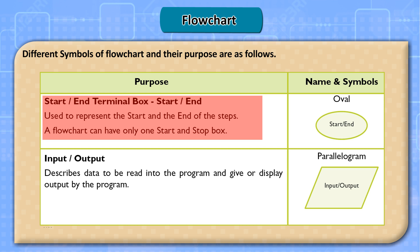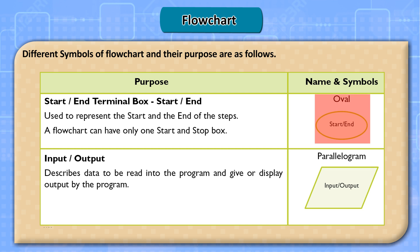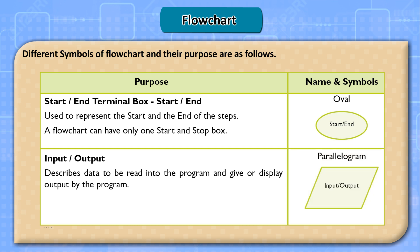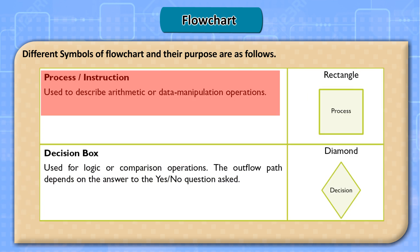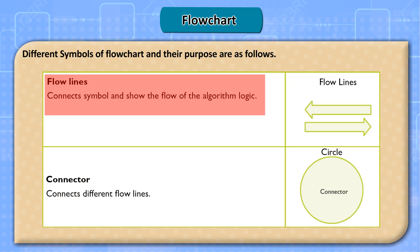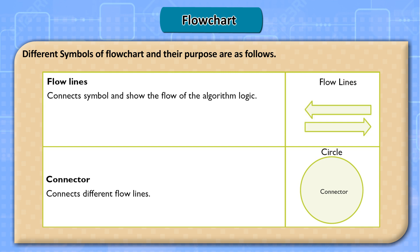The input/output symbol — a parallelogram — describes data to be read into the program and output to be displayed. The process symbol — a rectangle — is used to describe arithmetic or data manipulation operations. The decision box — a diamond shape — is used for logic or comparison operations; the outflow path depends on the yes/no answer to the question asked. Flow lines connect symbols and show the flow of algorithm logic. A connector — a circle — connects different flow lines.